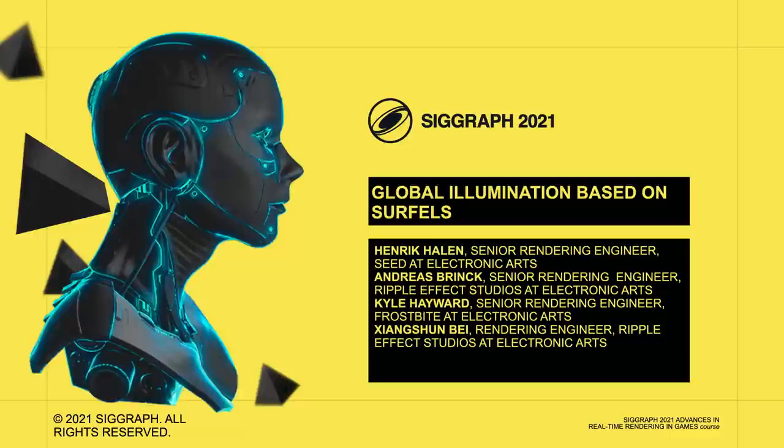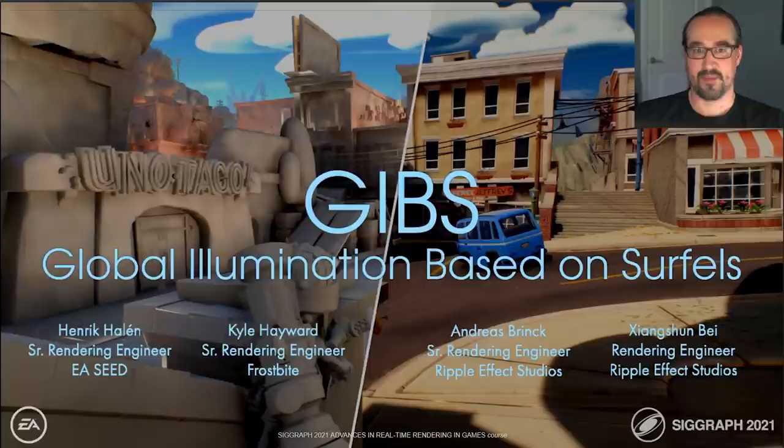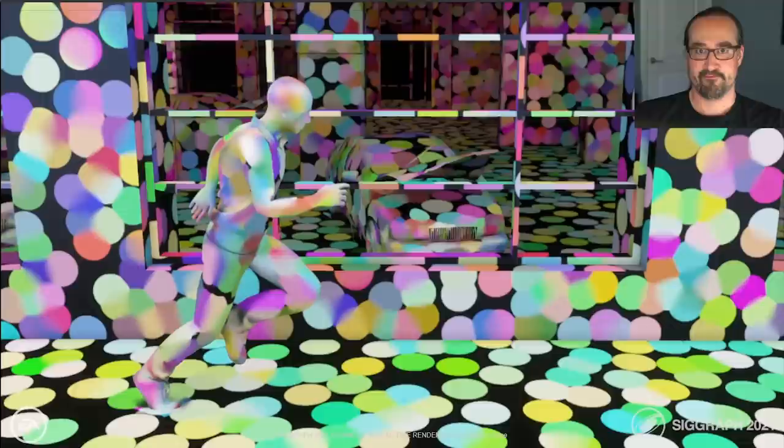Hello and welcome to our presentation on Global Illumination Based on Circles, or GIBS as we like to call it. I'm Henry Kalen from Electronic Arts Seed R&D Group. This presentation and much of the technology behind it has been put together by myself, Kyle Hayward from Electronic Arts Frostbite, and Andreas Brink and Xiangxin Bei from EA's Ripple Effects Studios. Today I will be presenting together with Kyle.